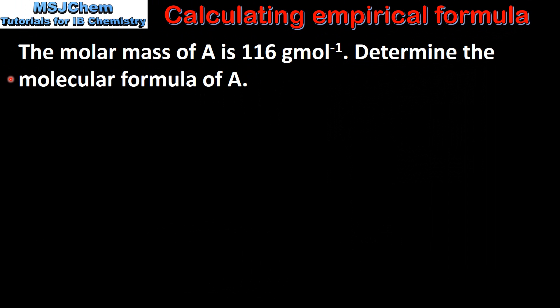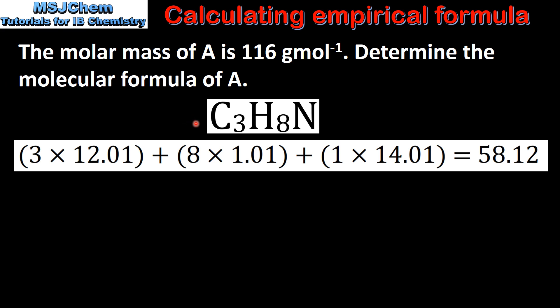Next we'll determine the molecular formula of A given its molar mass and its empirical formula. So the empirical formula of A was C3H8N. The first step is to add up the relative atomic masses of the atoms in the empirical formula. So that's 3 times 12.01 plus 8 times 1.01 plus 1 times 14.01, which gives us a total of 58.12.